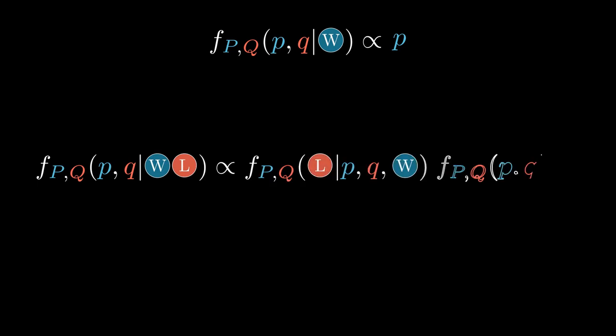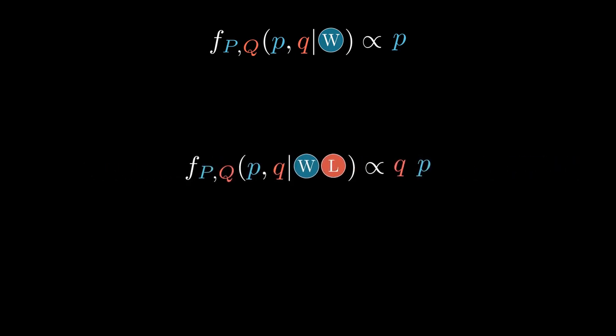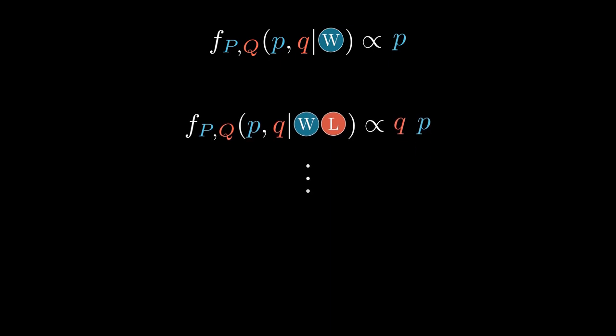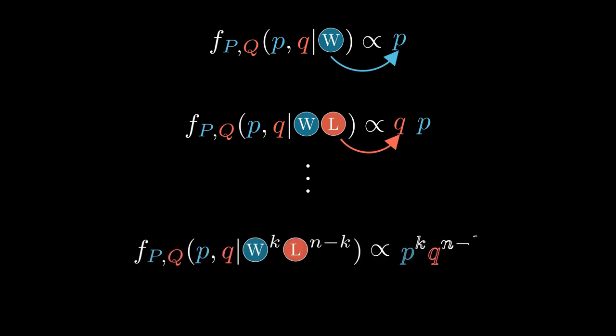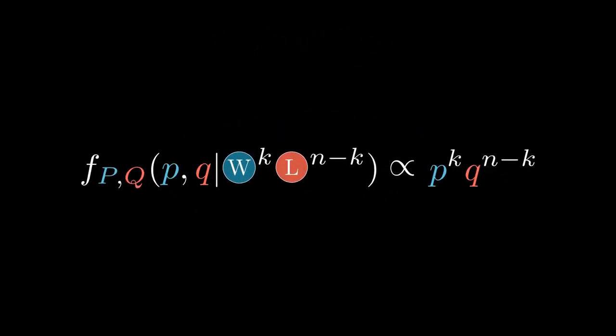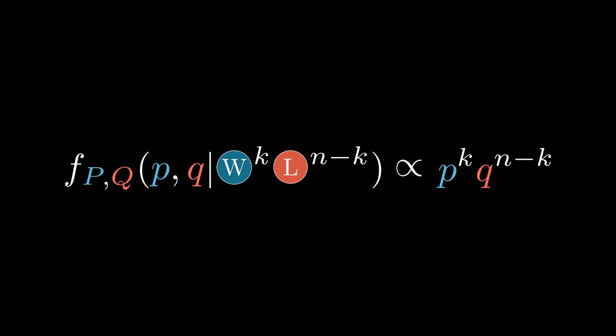If B wins the next game, using the proportional form of Bayes' theorem, f(P,Q|A won the first game and B won the second game) will be proportional to the probability of B won the second game given P,Q and A's win during the first game times f(P,Q|A wins the first game). The first term is Q and we use our previous result for the second term. Our density function now updates to a constant times P times Q. It should be easy to see where this is going. Every time A wins the game, a factor of P gets added to the density function while B's win adds a factor of Q. For example, if A won K games out of N games, then the density function would be proportional to P^K times Q^(N-K).